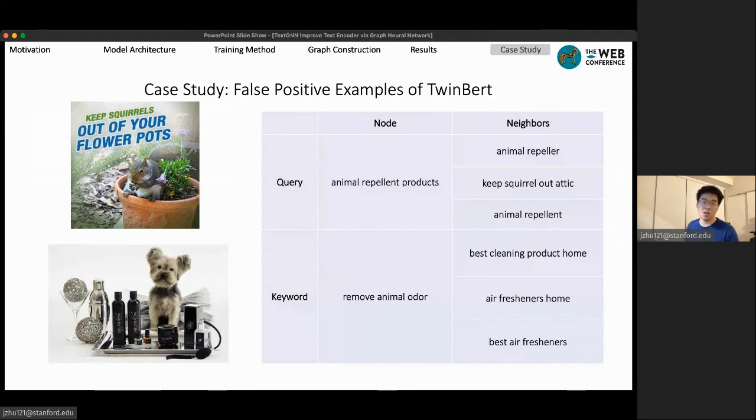The second false positive example is where TwinBERT determines that animal repellent product is highly relevant to remove animal odor, which are the animal cleaning products. From the semantic meaning, it is true that repellent is close meaning to the word remove. But the two products are used for completely different purposes. So when averaging over the neighbors, it is very clear that this is actually a negative example.